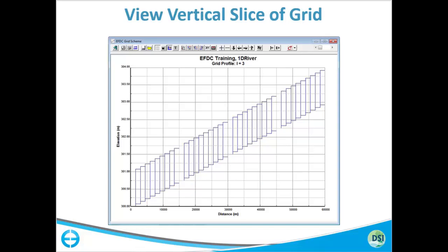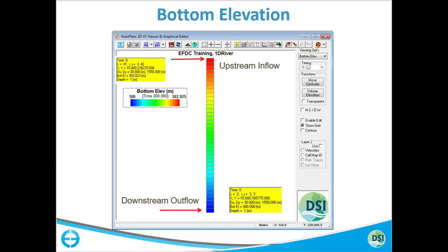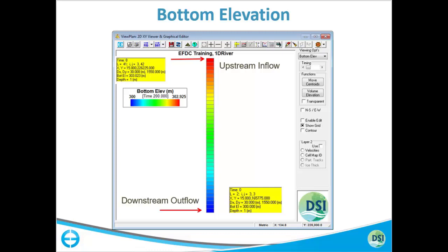If you want to look at how your grid looks, since each grid has a different bottom elevation and one meter depth, it looks like a step. Now we can look at our bottom elevation again and identify the locations where we will specify our upstream and downstream boundaries. In order to specify upstream and downstream, we are going to import some labels into the background so we know exactly at what points we want to introduce the boundary conditions.